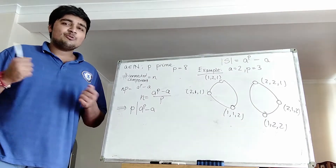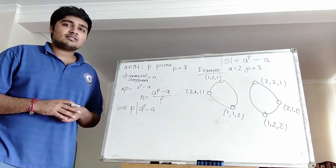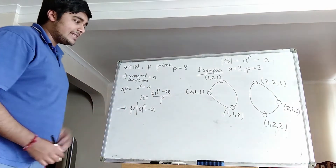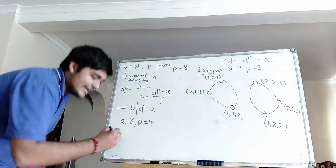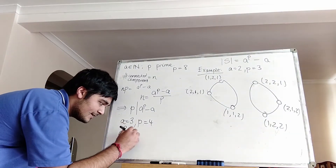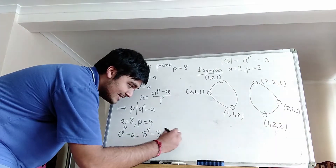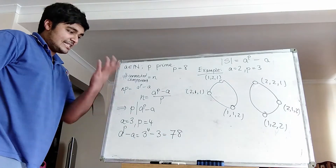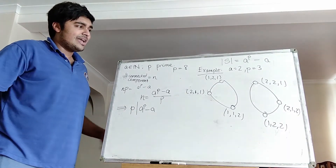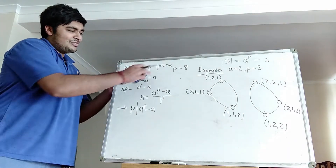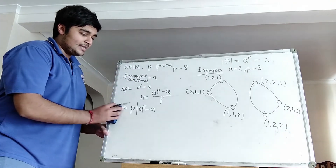Before I finish, you may be wondering where I used the fact that P was prime in this argument — because Fermat's Little Theorem doesn't hold in general for non-prime P. For example, let A equals 3 and P equals 4. Then A to the P minus A is 3 to the 4 minus 3, which is 81 minus 3 equals 78. And 4 doesn't divide 78 — so that's a counter-example for P not prime. So where did we use the fact that P was prime? It comes in when we assert that each cycle has length P.